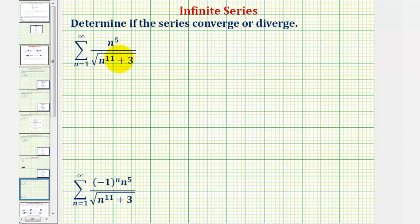We want to determine if the infinite series converge or diverge. Looking at the two series, notice how they're almost the same except one alternates and the other doesn't. To determine if the non-alternating series converges or diverges, we'll apply the limit comparison test. To begin, we'll find an infinite series that resembles this series that we know converges or diverges.